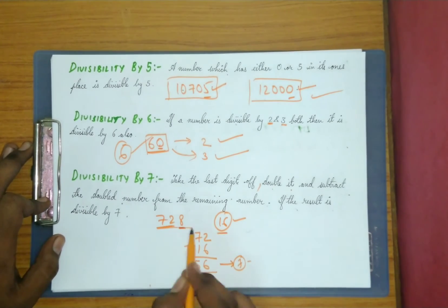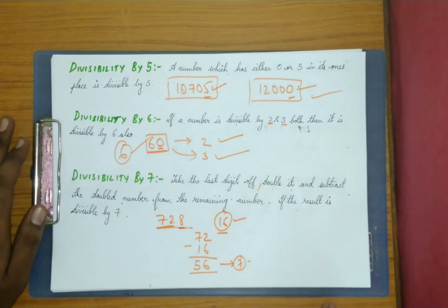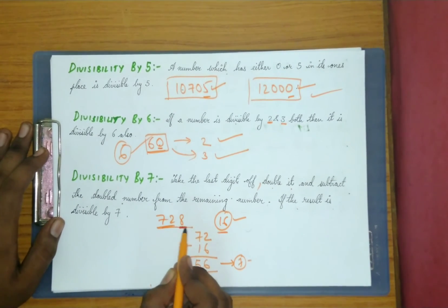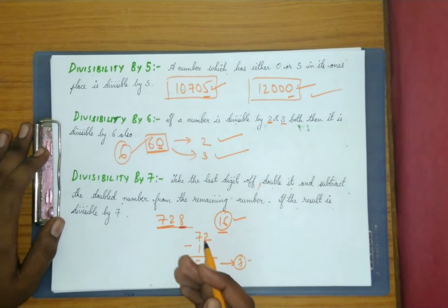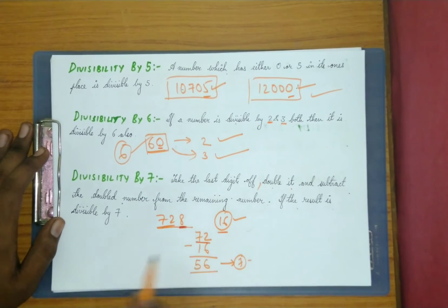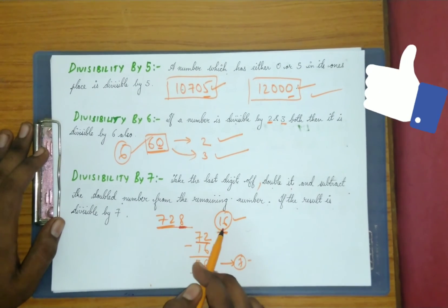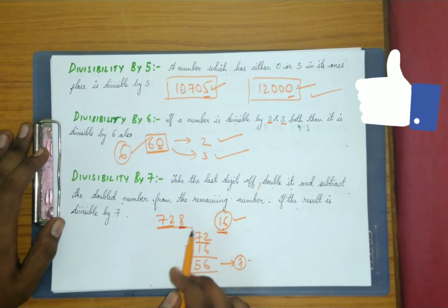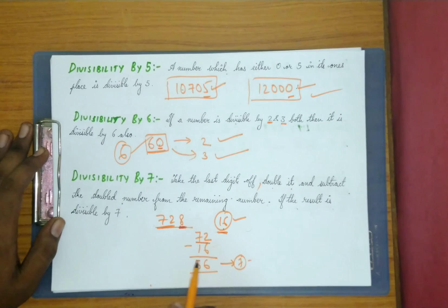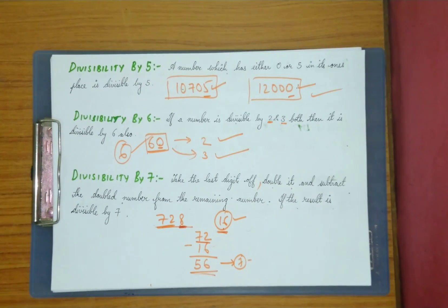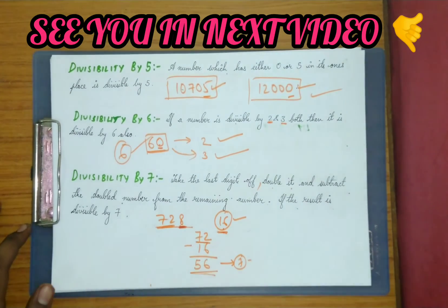So you can directly say that 728 is divisible by 7. To recap: take the number 728, remove the last digit to get 72, double the removed digit to get 16, subtract 16 from 72 to get a result, and check whether that result is divisible by 7. If it is, the original number is also divisible by 7.